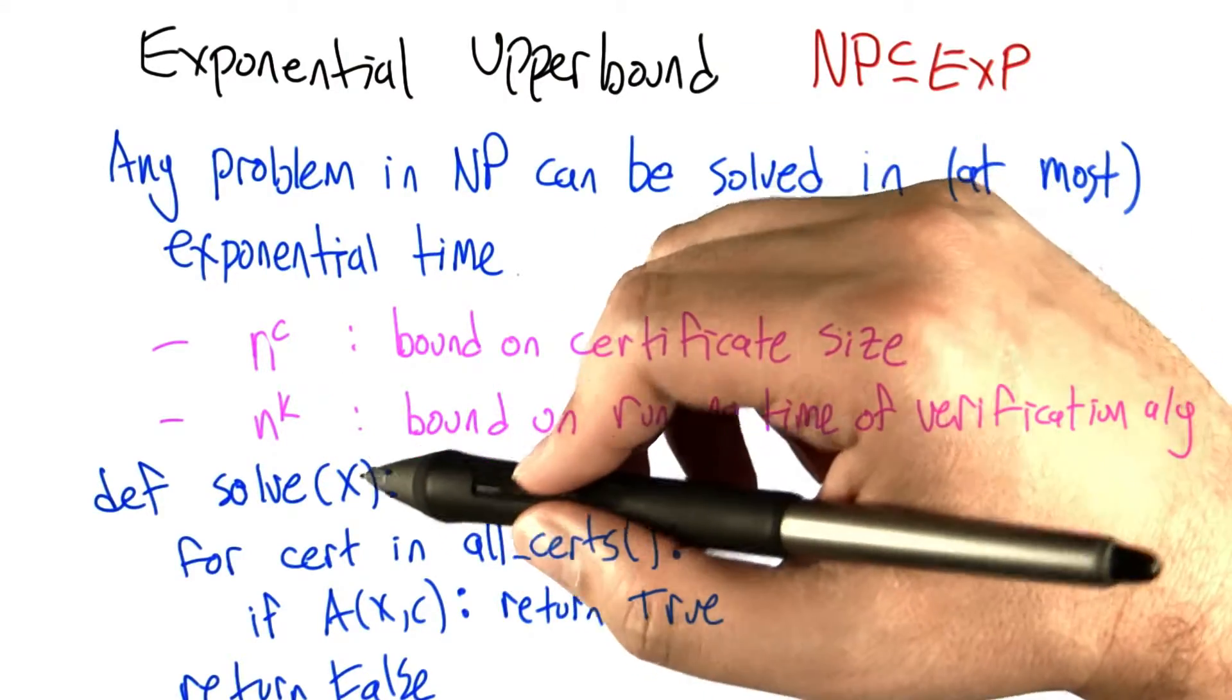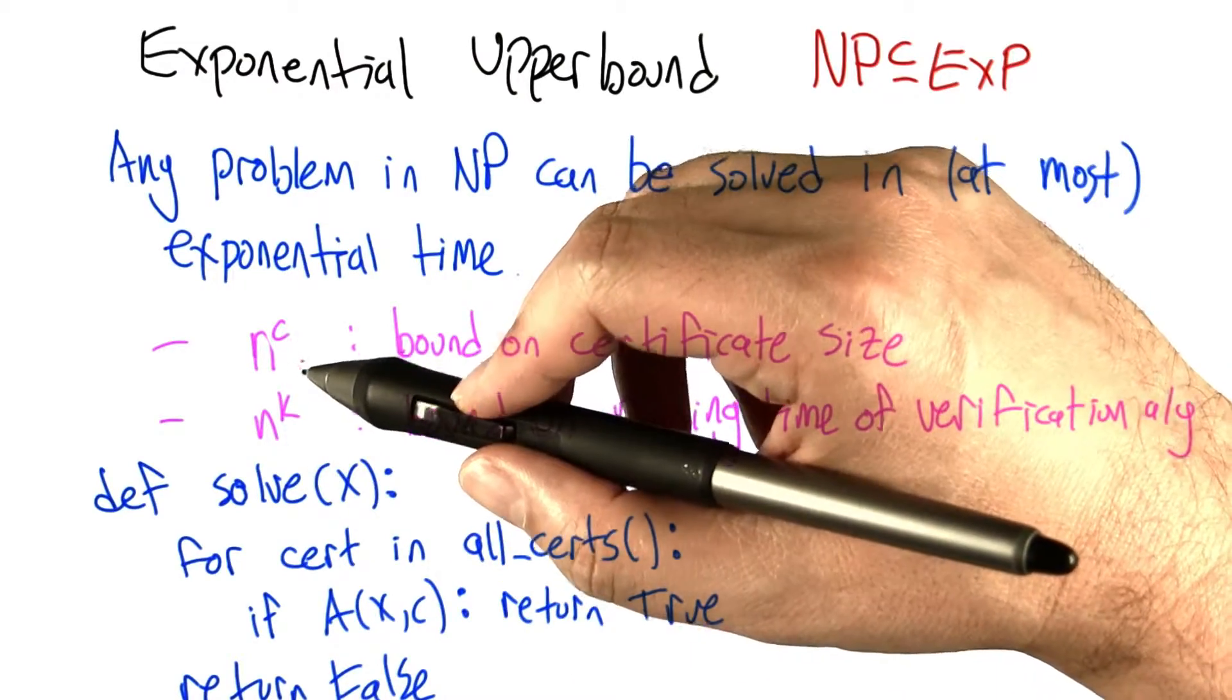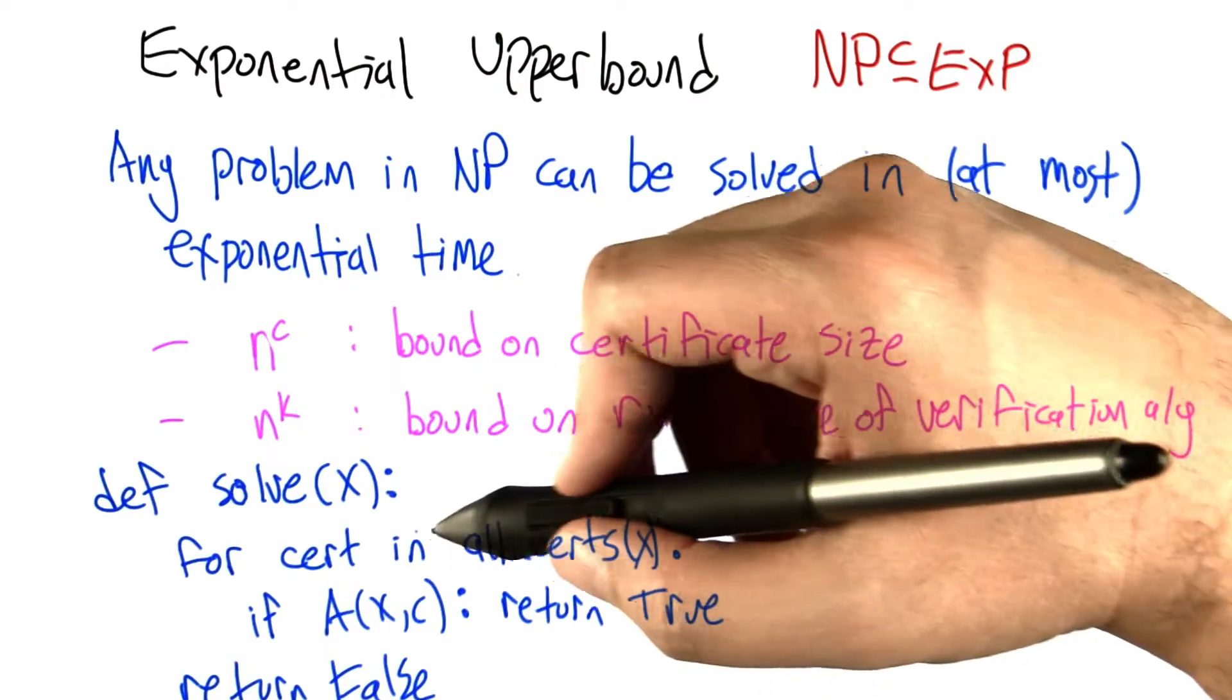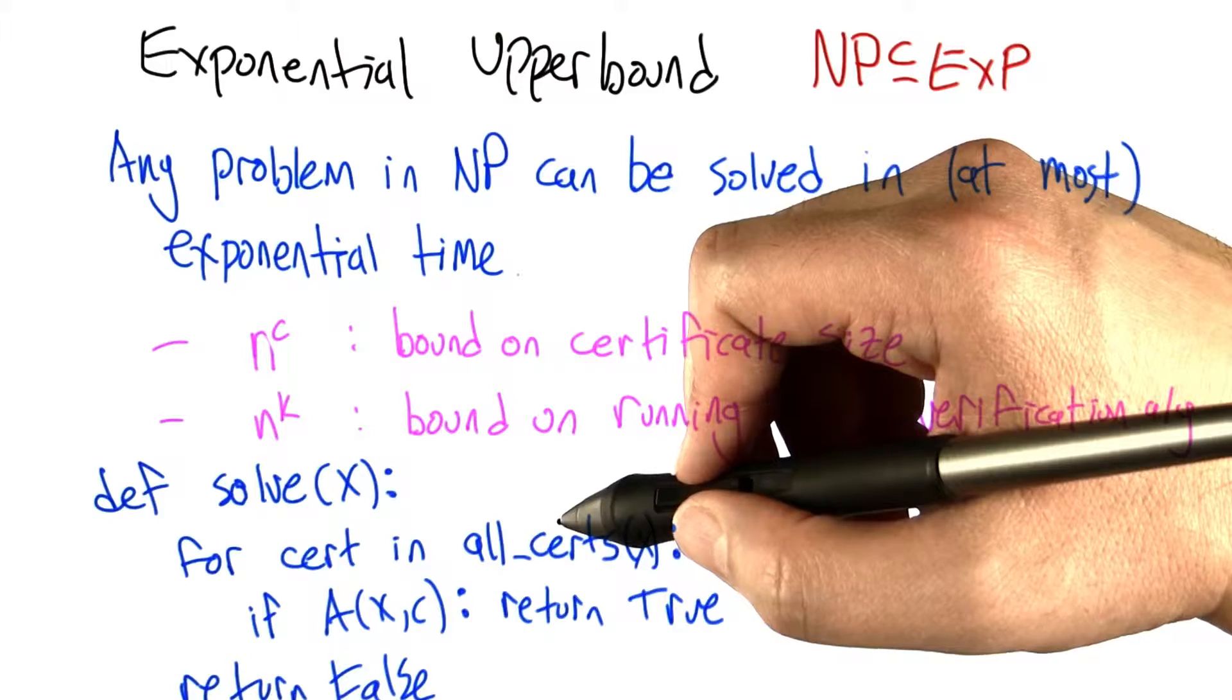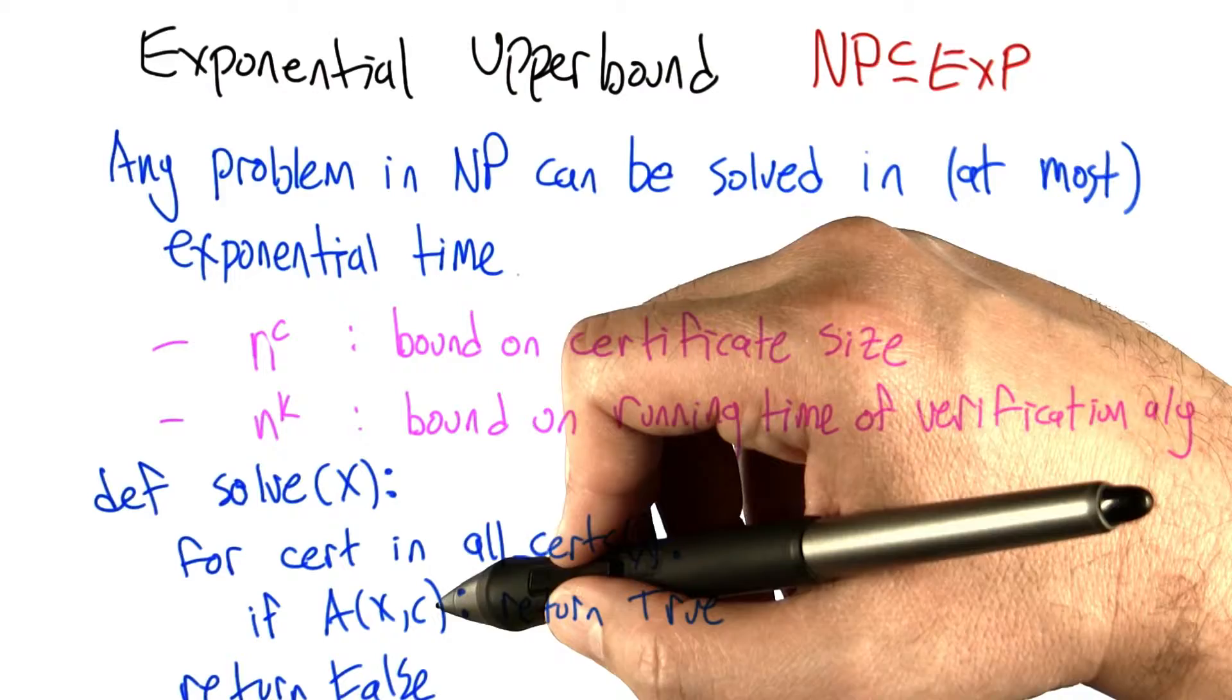If we have those two things, we can actually create an algorithm that can solve the problem for any input. What it needs to do is run through all the certificates that could possibly be relevant for input x. And for each one, we run the verification algorithm.